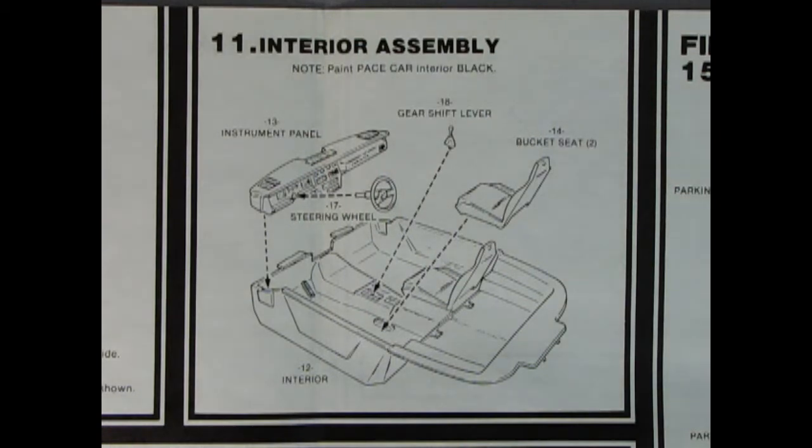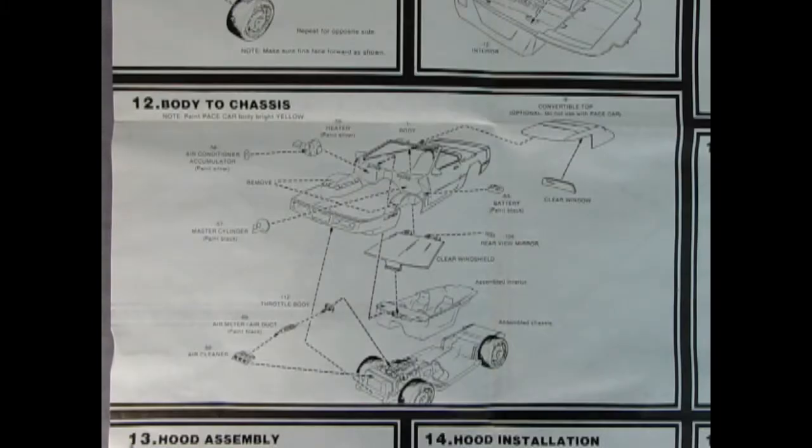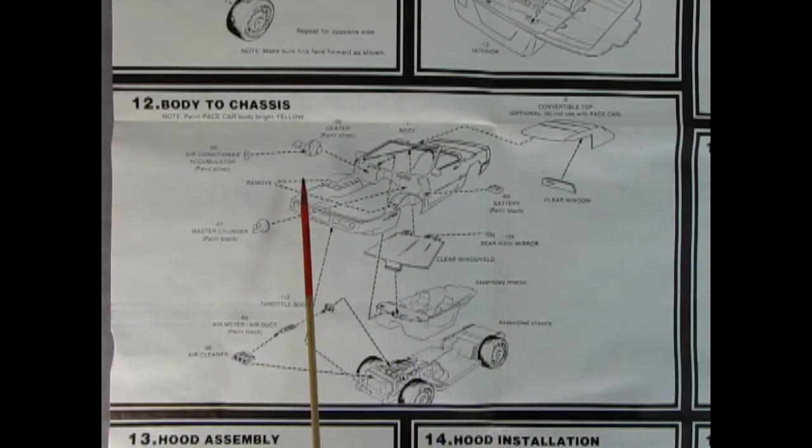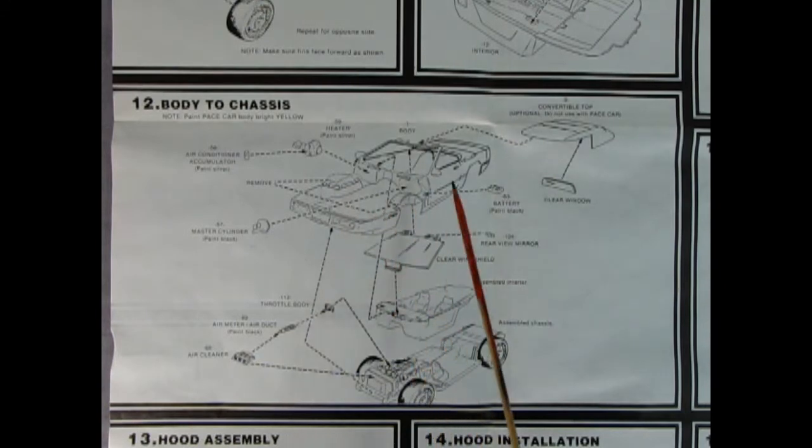Panel 12 is the body to chassis assembly. It says to paint the pace car body bright yellow, and even though it's molded in yellow, paint on top is always better, trust me. Here we have our heater and the air conditioner accumulator - boy I really wish they put this in the '85 kit. There's our master cylinder that goes in there. You got to remove the tops of these things and there should be a little button thing in between, I'm not too sure on that.